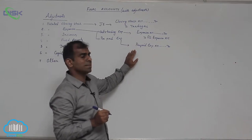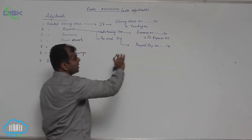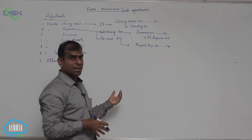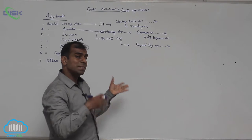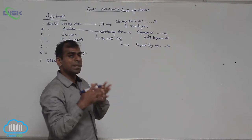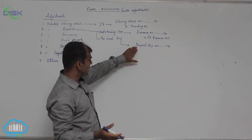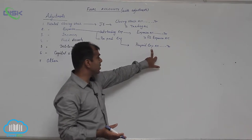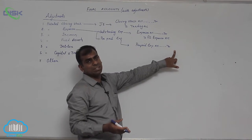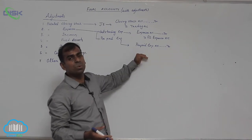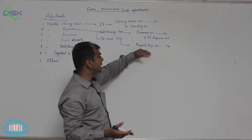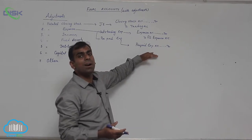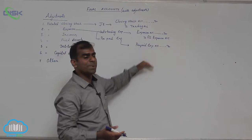Prepaid expense represents an amount which is paid in advance to an organization or a person. The amount is received by the person, therefore debit the receiver. We do not actually debit the name of the person; rather we represent the organization or person to whom we have given the money in advance with the word 'prepaid expense'. That is why it is called a representative personal account.